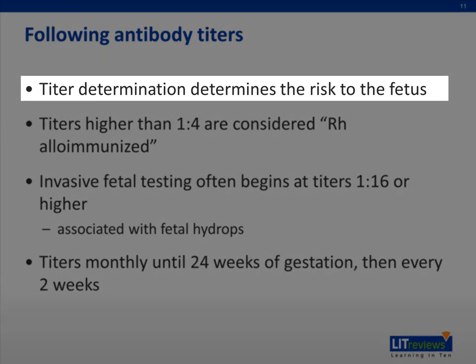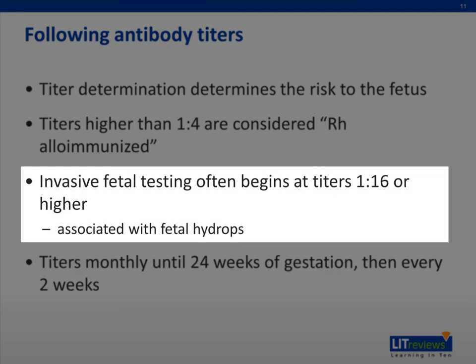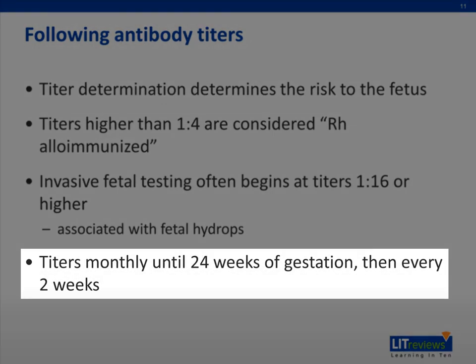Antibody titer levels determine the risk to the fetus. Titers higher than a ratio of 1 to 4 are considered indicative of an Rh alloimmunized mother. Invasive fetal testing often begins at titers of greater than 1 to 16 or higher, and are associated with fetal hydrops. Titers are drawn monthly until 24 weeks of gestation and then every two weeks during pregnancy, and along with other testing can help guide the timing of delivery.